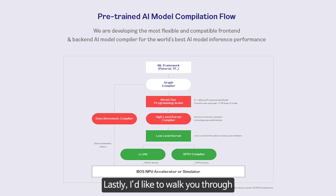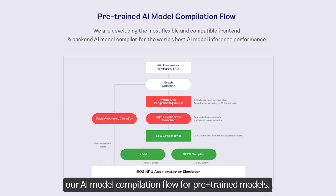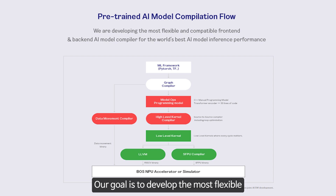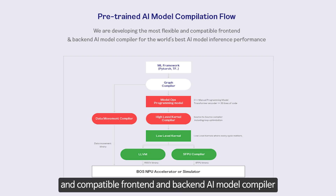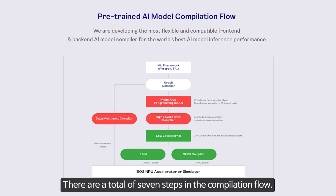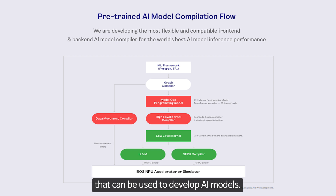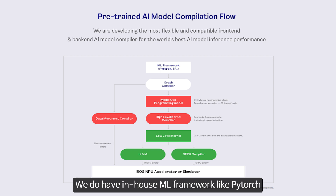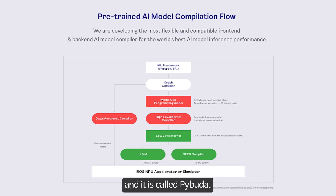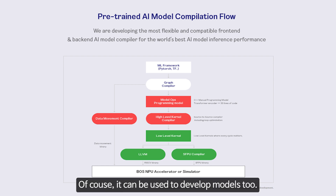Lastly, I'd like to walk you through our AI model compilation flow for pre-trained models. Our goal is to develop the most flexible and compatible front-end AI model compiler to achieve the world's best model inference performance. There are a total of seven steps in the compilation flow. The first step supports various machine learning frameworks such as PyTorch, TensorFlow, and ONNX. We also have an in-house ML framework like PyTorch called PyBuda.